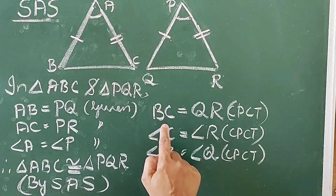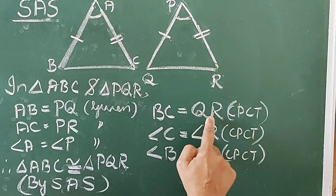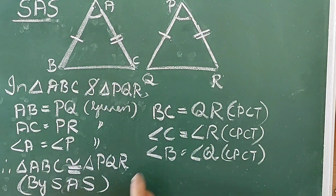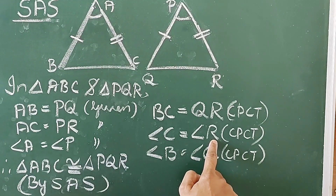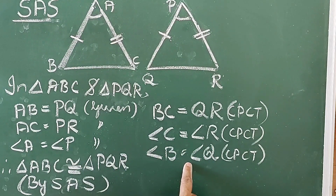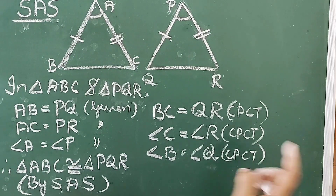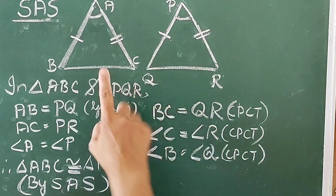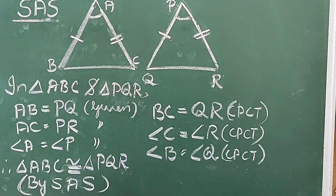Therefore, BC equal to QR — that is the remaining side. Angle C equal to angle R. Angle B equal to angle Q, as they are the corresponding parts of the congruent triangles.